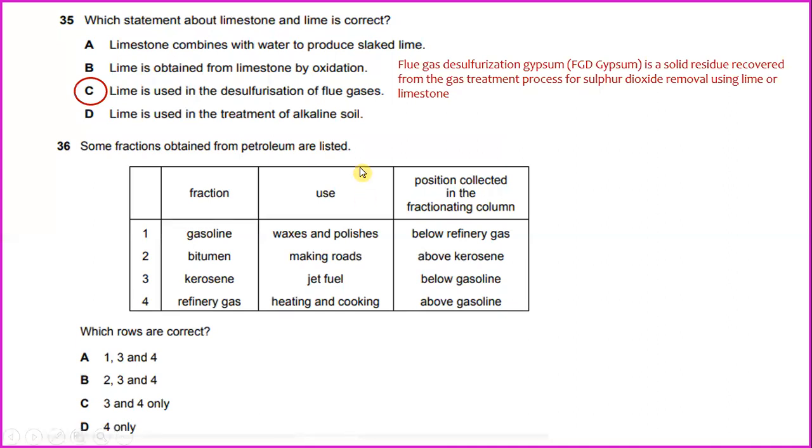Some fractions obtained from petroleum are listed. The kerosene fraction is used for jet fuel below gasoline. And also fraction, the refinery gas is used for heating and cooking above gasoline.